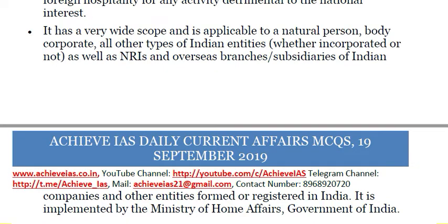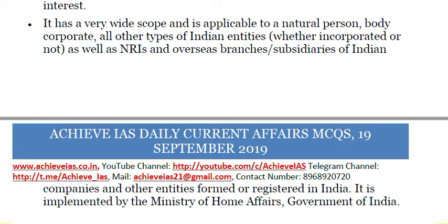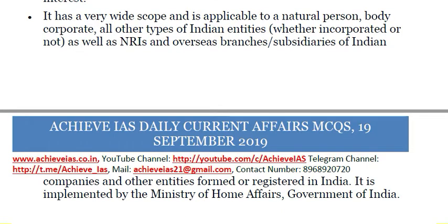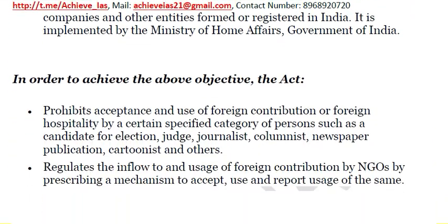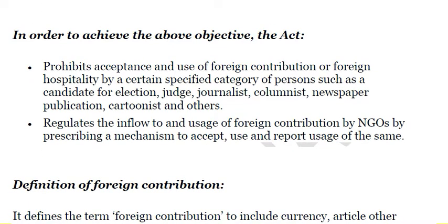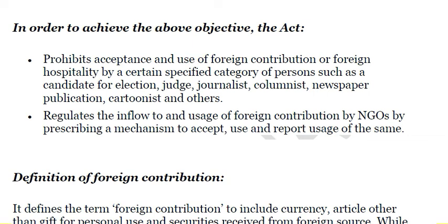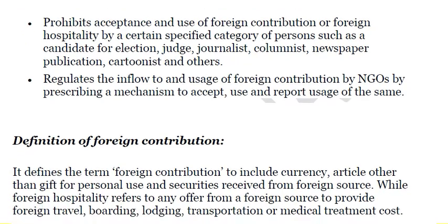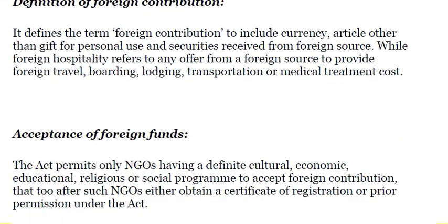FCRA has a very wide scope and is applicable to a natural person, a body corporate, all other types of Indian entities whether incorporated or not, as well as NRIs and overseas branches and subsidiaries of Indian companies and other entities formed or registered in India. It is implemented by the Ministry of Home Affairs, Government of India. To achieve its objectives, the act prohibits acceptance and use of foreign contribution or foreign hospitality by certain specified categories of persons such as candidates for election, judges, journalists, columnists, newspaper publications, and cartoonists. It also regulates the inflow and usage of foreign contributions by NGOs by prescribing a mechanism to accept, use, and report usage.